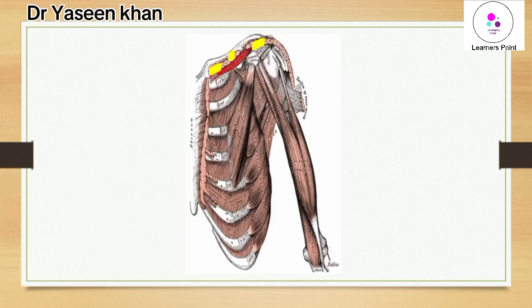For nerve supply, a specific nerve supplies this muscle called the nerve to subclavius — the subclavian nerve. So to summarize: the subclavius muscle lies below the clavicle, originates from the upper surface of the first costal cartilage, and inserts into the inferior surface of the middle one-third of the clavicle.